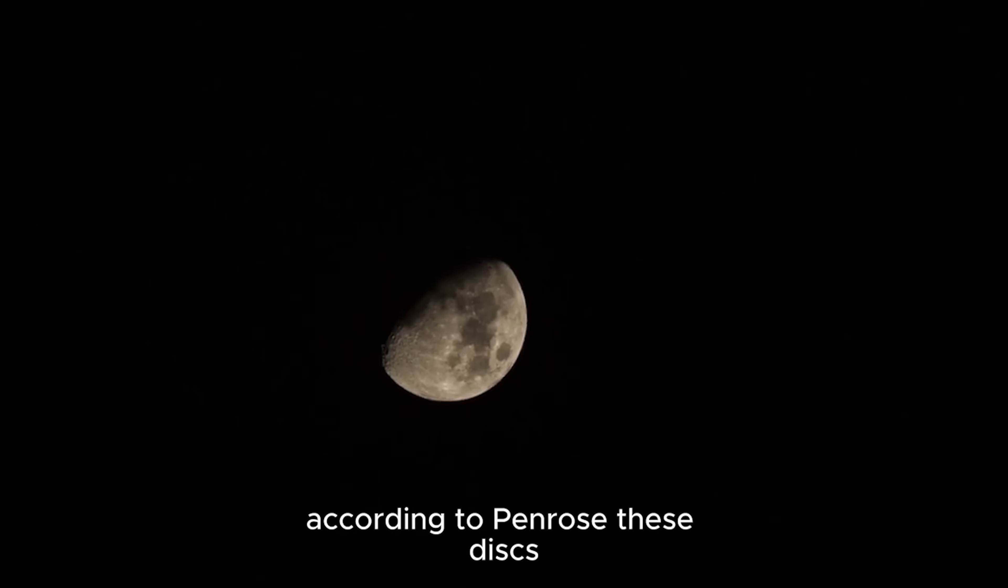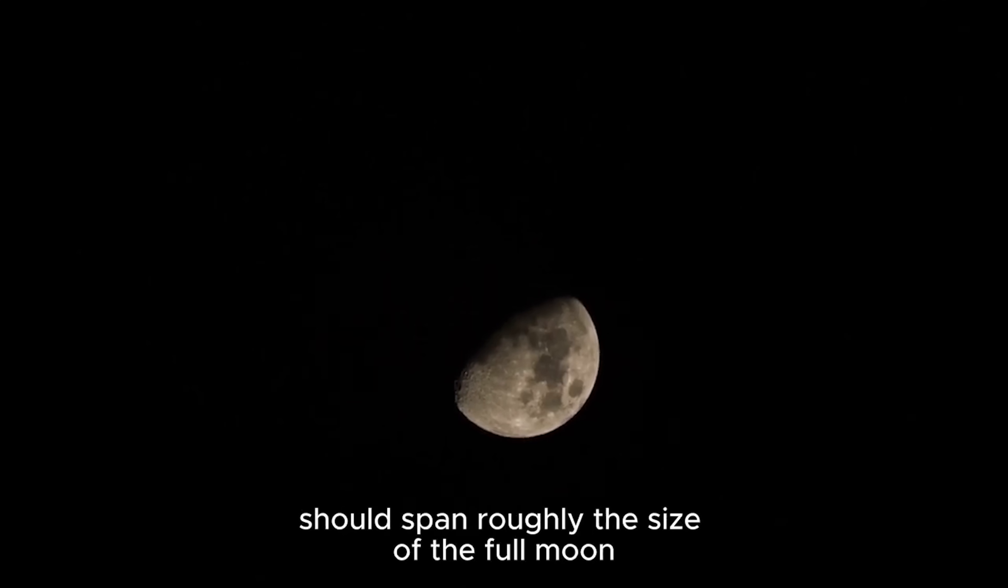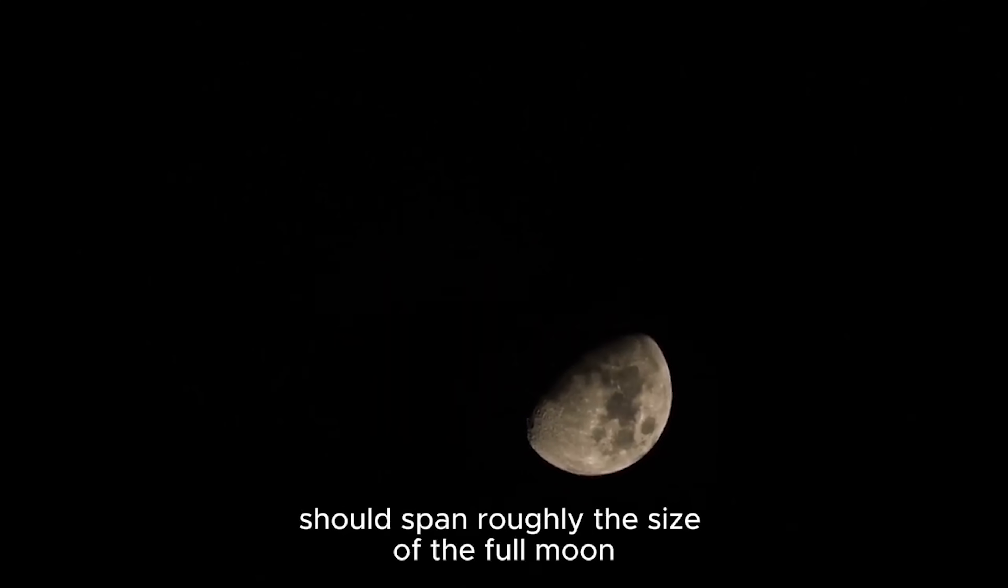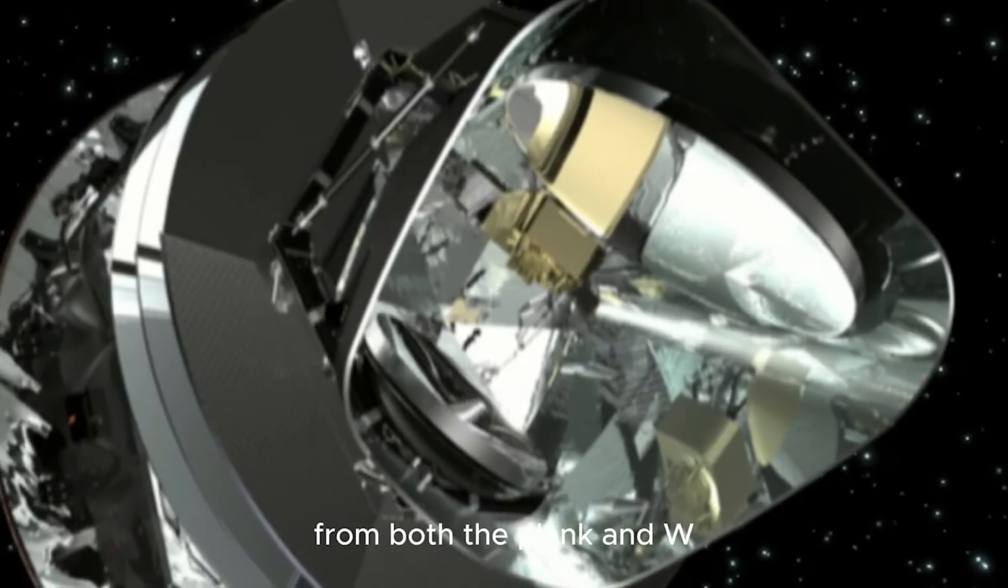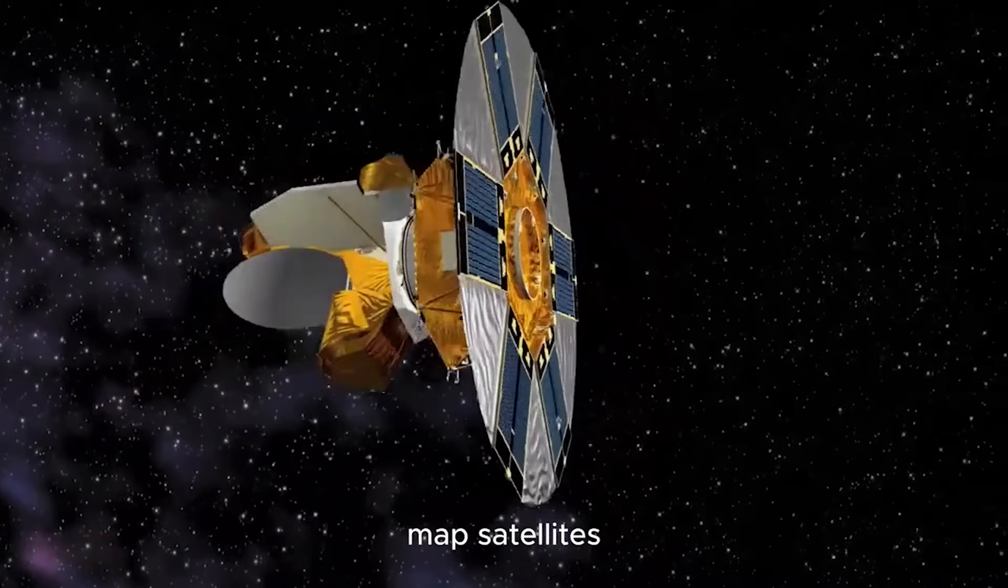According to Penrose, these disks should span roughly the size of the full moon. And remarkably, that's what he and his team have found in the data from both the Planck and WMAP satellites.